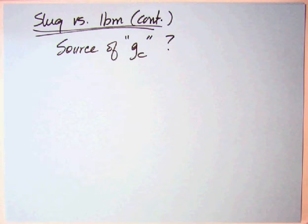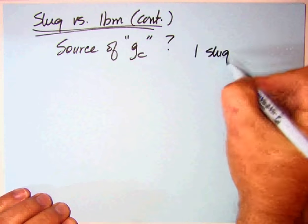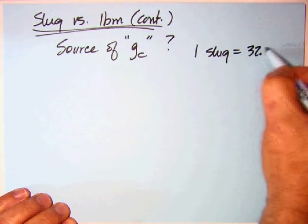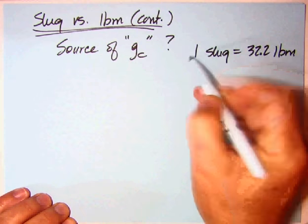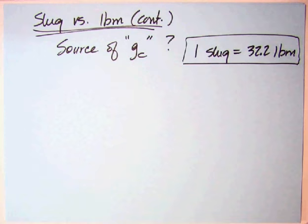So what is this source of G sub C? It appears throughout the MERM. In fact, he has usually two sets of equations, one for U.S. customary and one for SI metric. It's totally unnecessary if you went and used slugs, but he doesn't. So you see this G sub C. Where does that come from? It comes from this relationship we found earlier, that one slug is 32.2 pound mass.